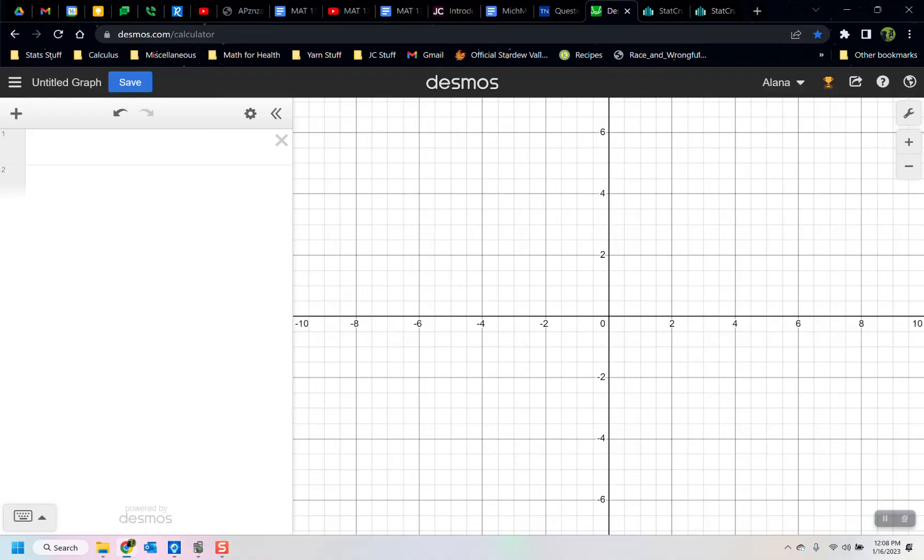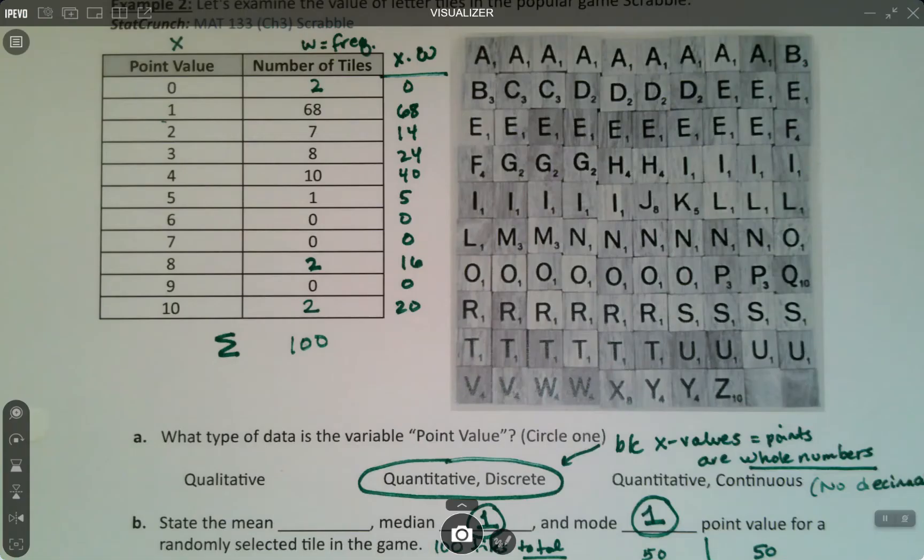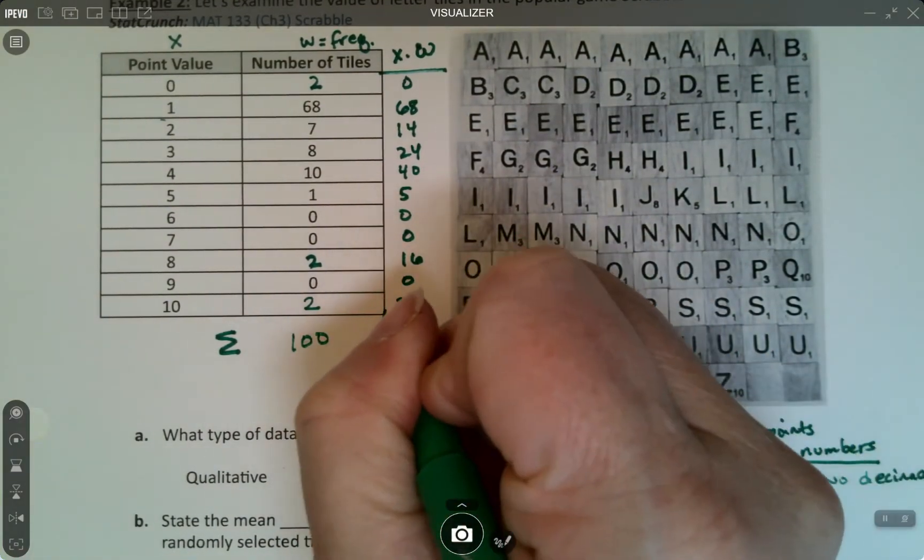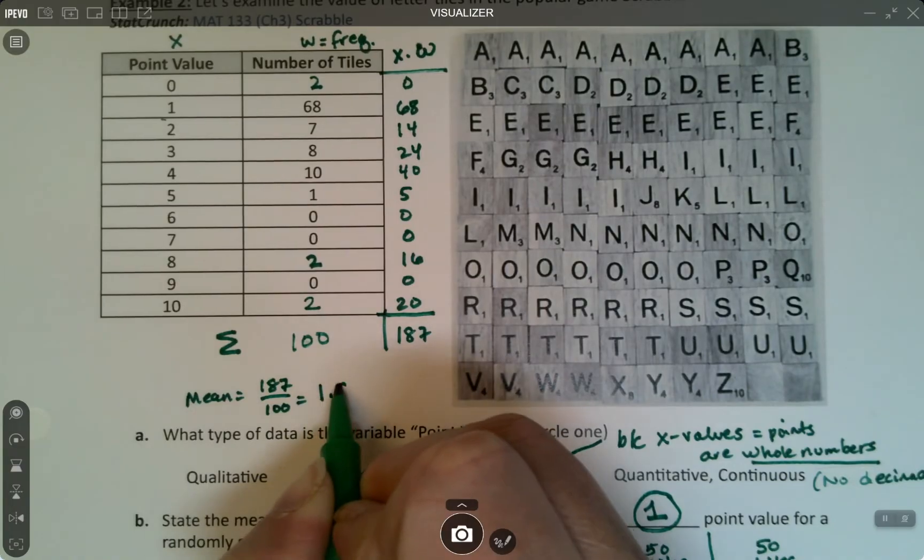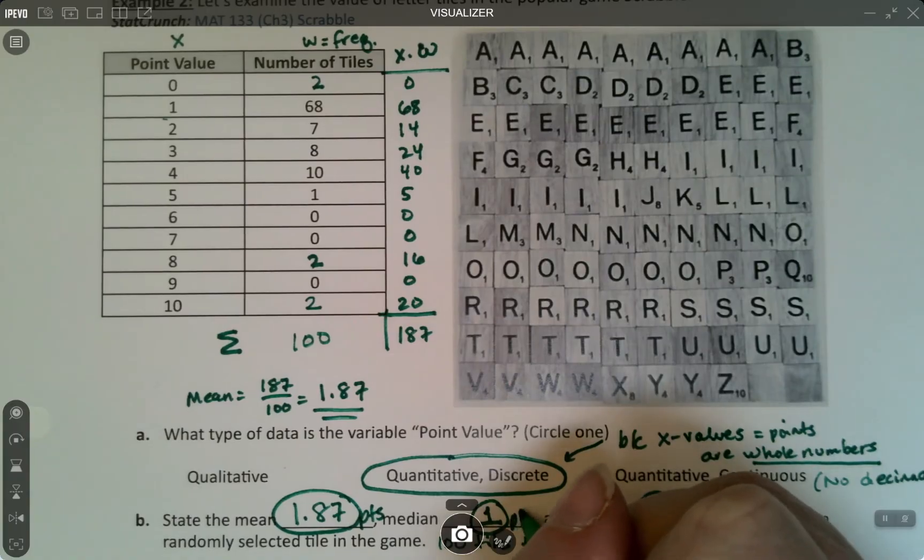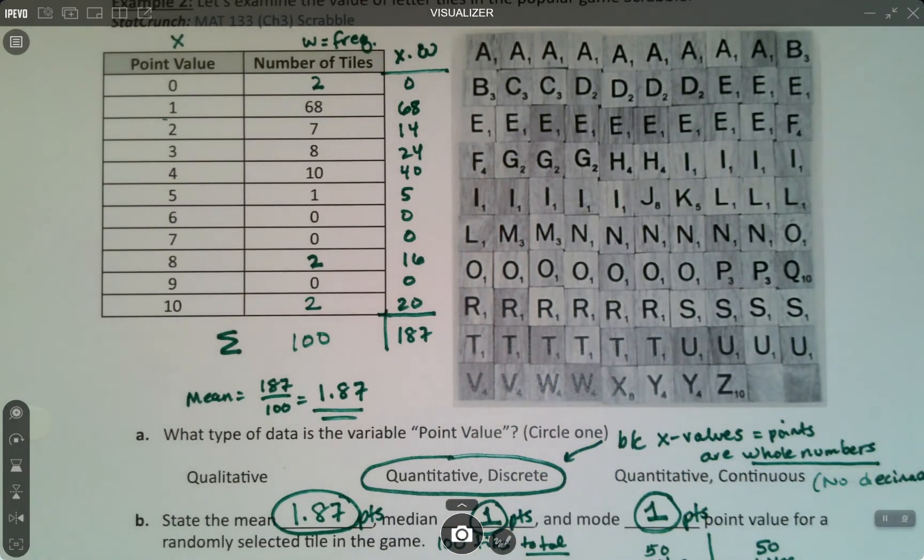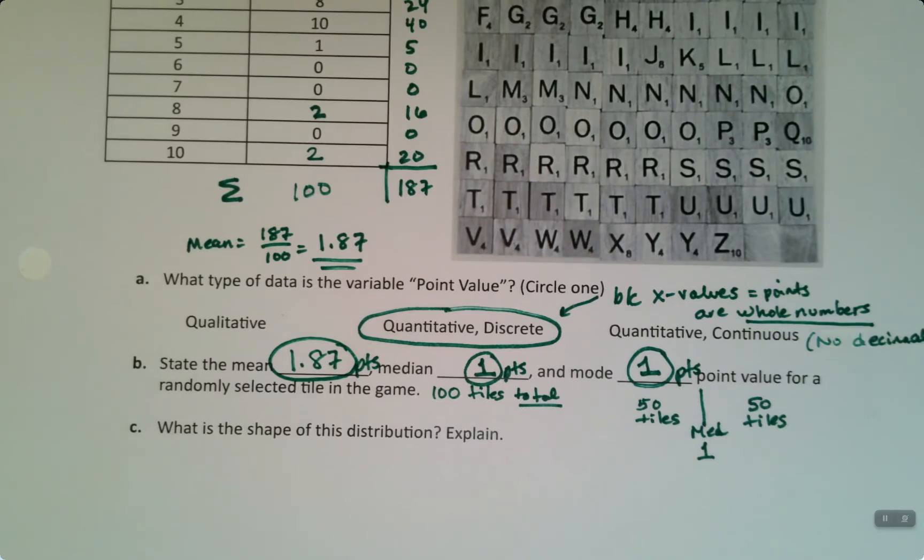Let's go to Desmos and prove these things. First, 2 plus 68 plus 7 plus 8 plus 10 plus 1 plus 0 plus 0 plus 2 plus 0 plus 2 is indeed 100. And then these numbers - 0 plus 68 plus 14 plus 24 and so on - we get 187 and we get 100. So the total here is 187, the total here is 100. That means the mean will be 187 divided by 100, which is 1.87 points. These all have units - that's points. This is a game, so points would be your unit.